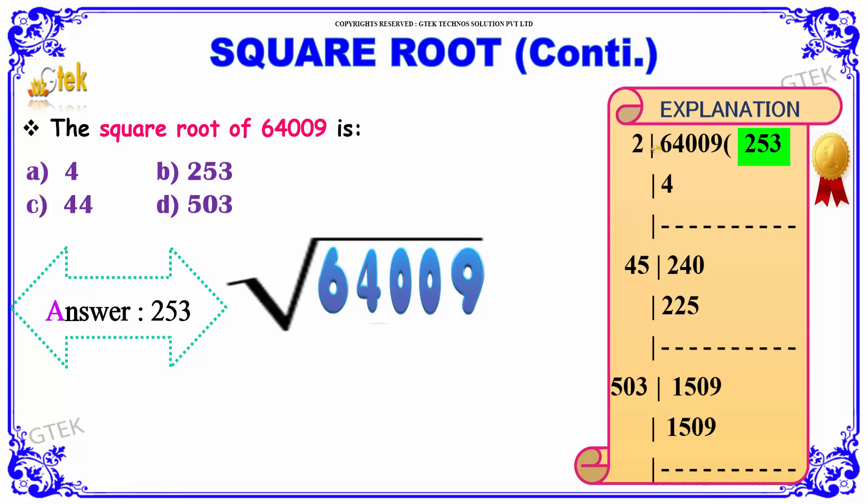On taking the square root, we have to divide the number into pairs from the right end. So that makes the first pair to be 09 and the second pair to be 40. And we have a single number left, that is 6.